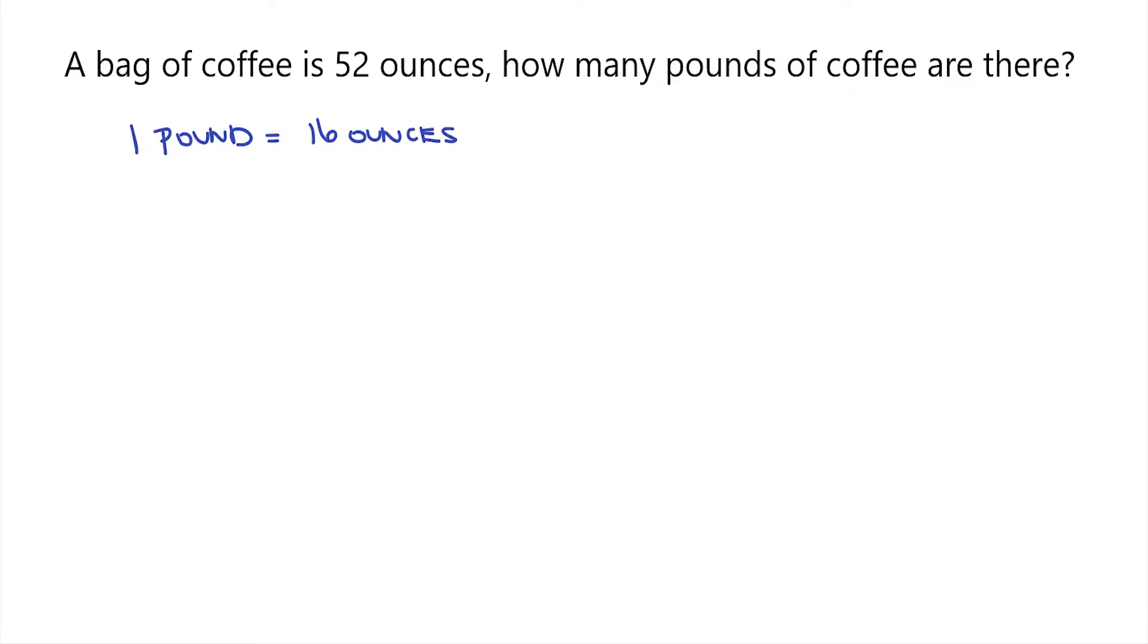We can also write this as a relationship in a fraction. So for every one pound, we have 16 ounces, or we could say that for every 16 ounces, we have one pound.